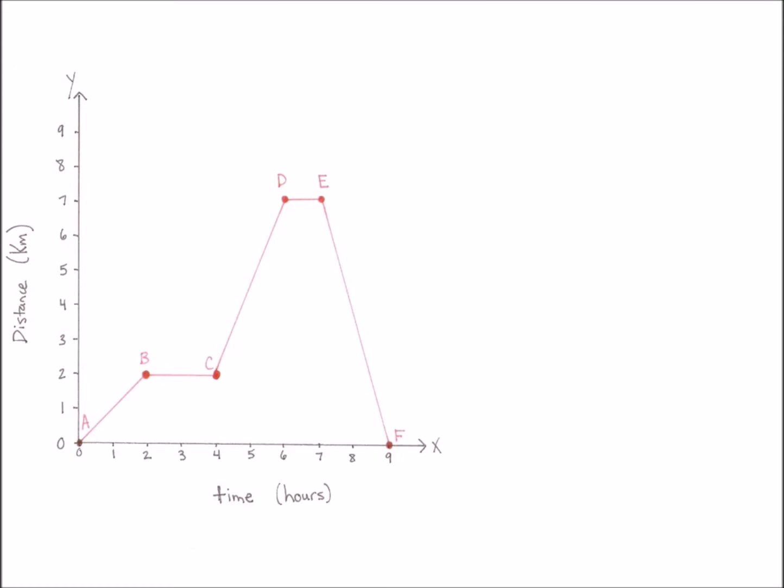The first segment involves beginning at 0 kilometers and moving to 2 kilometers away from our starting point over the course of two hours. We can say that we're moving away from our starting point as well as we're moving at constant speed since the slope is constant for that entire segment.